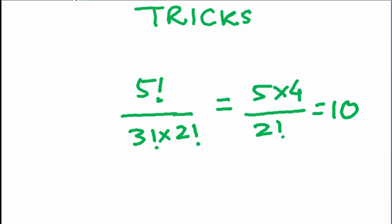Now, instead of writing this, we can simply see here, 5 factorial by 3 factorial × 2 factorial. So, 5×4×2 will give us 10.